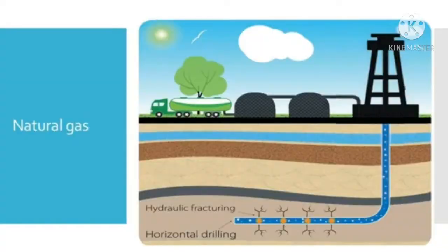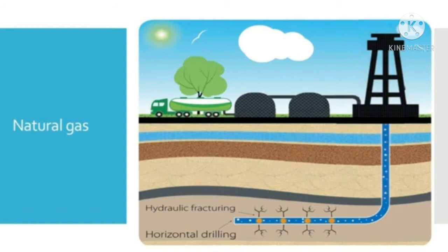Natural gas is a naturally occurring hydrocarbon gas mixture consisting primarily of methane along with other higher alkanes and a small percentage of carbon dioxide, nitrogen and hydrogen sulfide. If the natural gas contains lower hydrocarbons like methane and ethane, it is called dry gas. If higher hydrocarbons like propane and butane are also present in the gas, it is called wet gas.